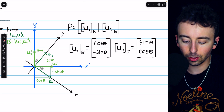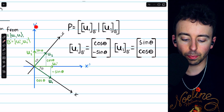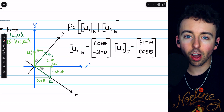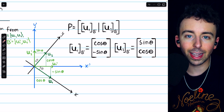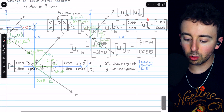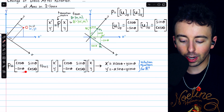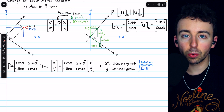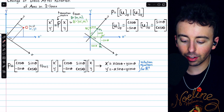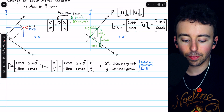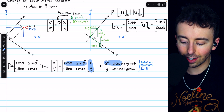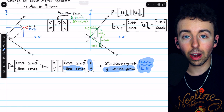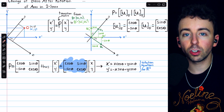Now we can build our transition matrix P using these as the column vectors — the old basis vectors with respect to the new basis. That's how we build the transition matrix. So using those re-expressed basis vectors, we make this transition matrix P. Thus, the new coordinates of any vector with respect to these rotated axes can be found by multiplying that transition matrix by the original coordinates x and y. Doing the multiplication gives us this set of equations, which are sometimes called the rotation equations for R squared.